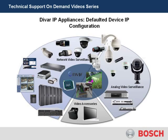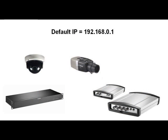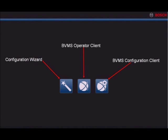Welcome to Bosch's technical support on demand video series: DVAR IP appliances, defaulted device IP configuration. If deploying new Bosch video devices in a non-DHCP environment, all devices will be configured with their factory default IP address of 192.168.0.1. Initial configuration using the Configuration Wizard is not possible. You will have to use BVMS Configuration Client to configure static IP addresses to all of your new Bosch IP cameras and encoders.